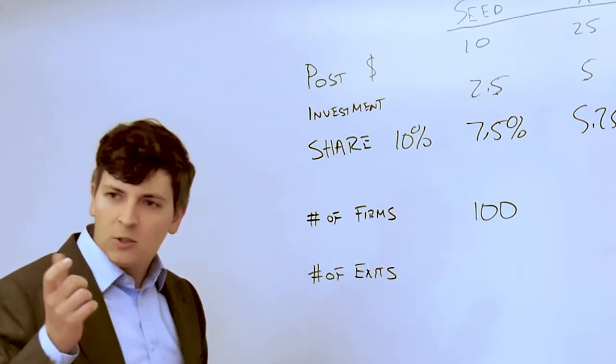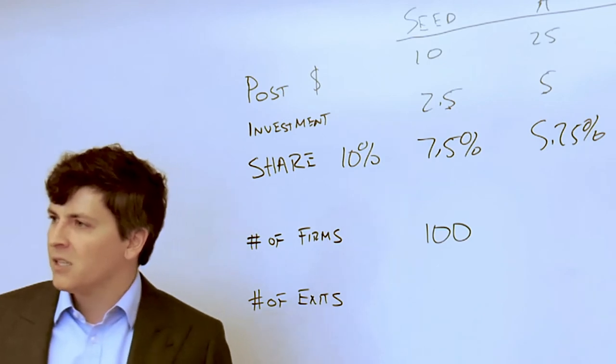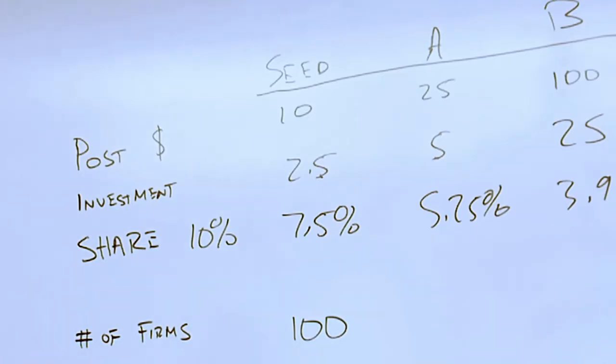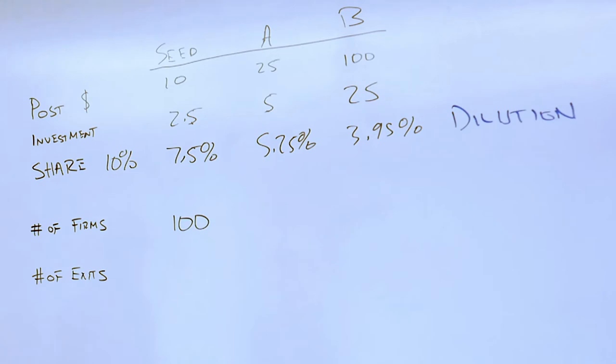And so if you take into account what the probability of success is, that's going to enable you to think about some central tendency for what the average valuation is going to be once you've taken into account dilution.